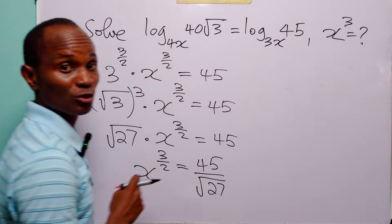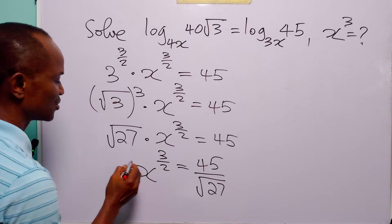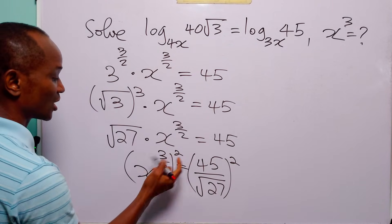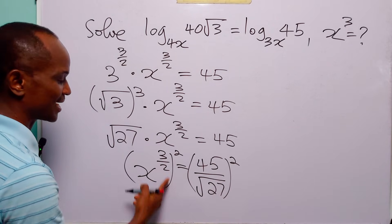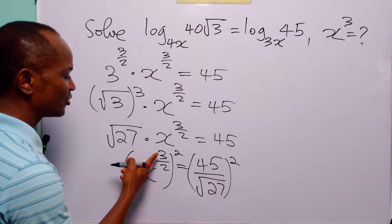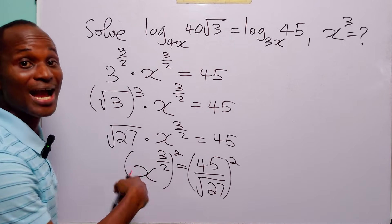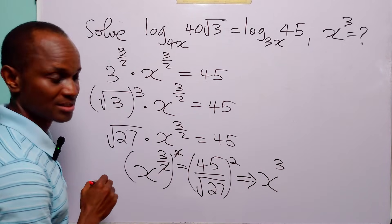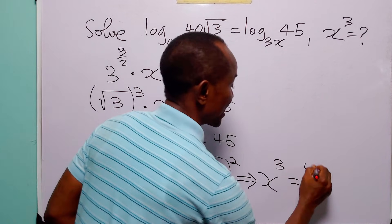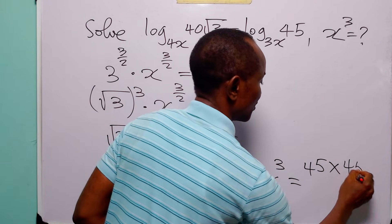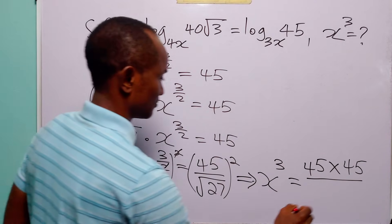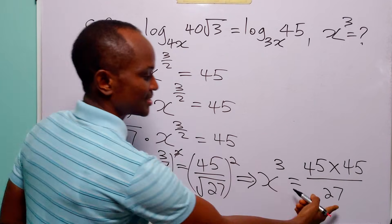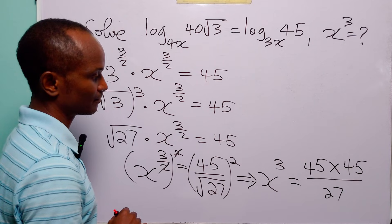Remember that what we are looking for is x³. To get x³ from x^(3/2), we square both sides of the equation — because multiplying the exponent 3/2 by 2 gives 3. So x³ equals (45)² divided by (√27)², which is 45 times 45 divided by 27.